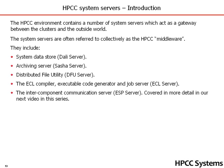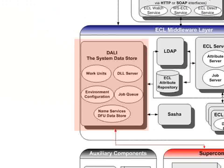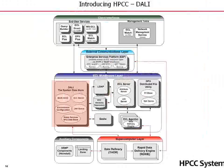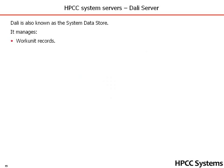We'll cover the ESP server in more detail in our next video in this series. Let's start with DALI — the System Datastore. It manages work unit records, which are essentially jobs that are sent to the cluster to act upon the data that's there. It also manages the logical file directory, which is where the data actually resides.